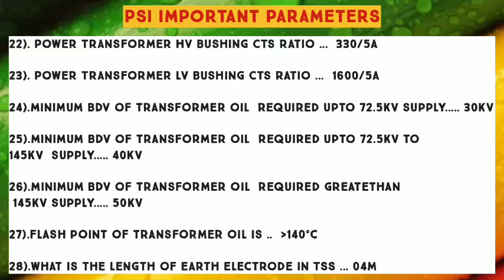Number 23: Power Transformer LV Bushing CTs Ratio — 1650. Number 24: Minimum BDV of Transformer Oil required up to 72.5 KV supply — 30 KV. Number 25: Minimum BDV of Transformer Oil required from 72.5 KV to 145 KV supply — 40 KV.